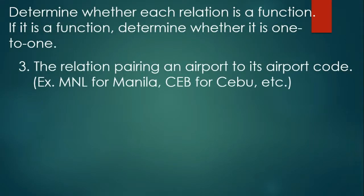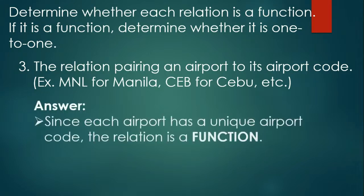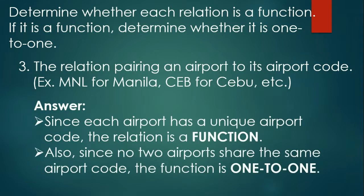Third example: the relation pairing an airport to its airport code. For example, MNL for Manila, CEB for Cebu, DVO for Davao, and JFK for John F. Kennedy Airport in New York City. Since each airport has a unique airport code, the relation is a function. Also, since no two airports share the same airport code, the function is one-to-one.